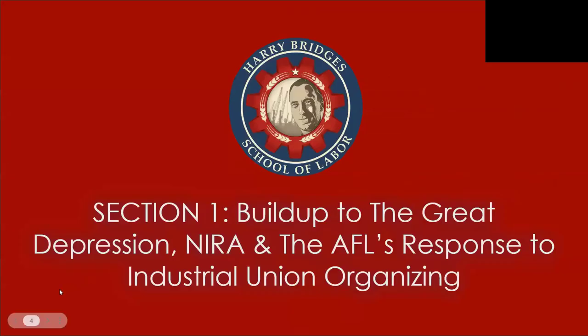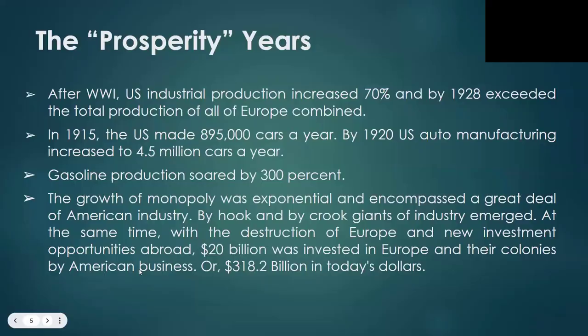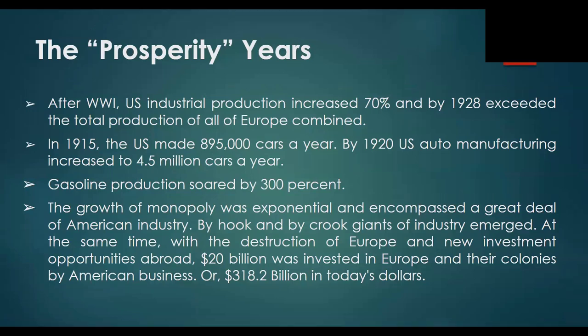Section 1: the buildup to the Great Depression, the National Industrial Recovery Act, and the AFL's response to industrial union organizing. After World War I, U.S. industrial production increased 70%, and by 1928 exceeded the total production of all of Europe combined. In 1915, the U.S. made 895,000 cars a year. By 1920, U.S. auto manufacturing increased to 4.5 million cars per year.